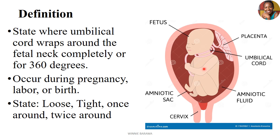The cord has two portions: it has the placenta part and it has the fetal end. Because of different reasons, this cord can just wrap around the neck of the child, and the state where the cord is wrapping around the neck of the child is what we are calling the knuckle cord.